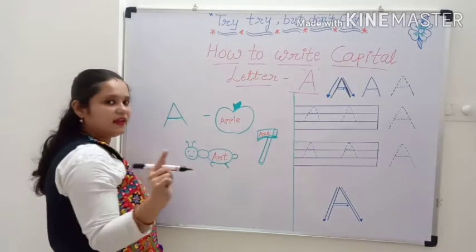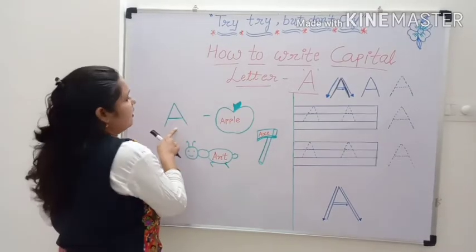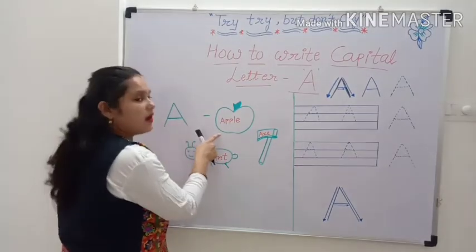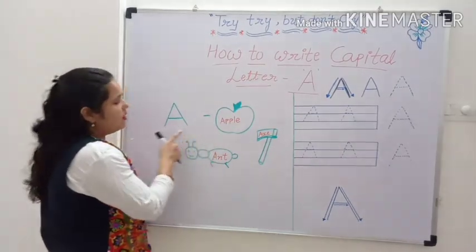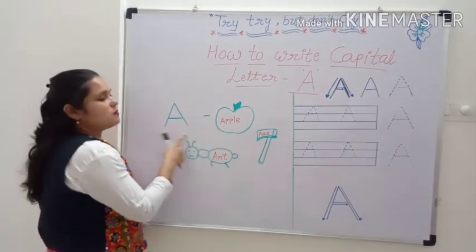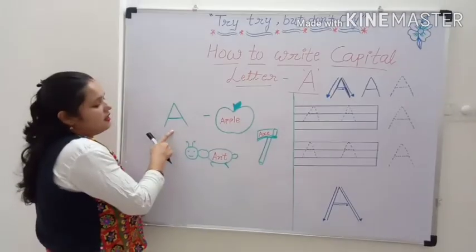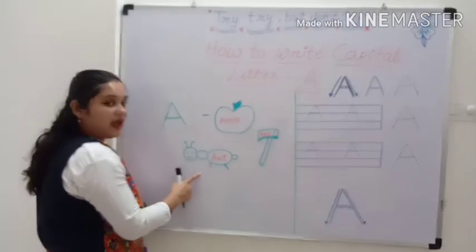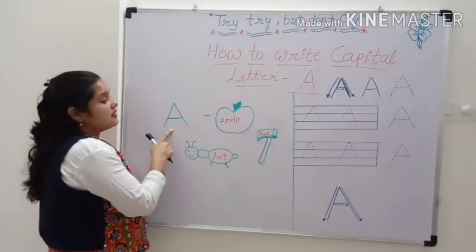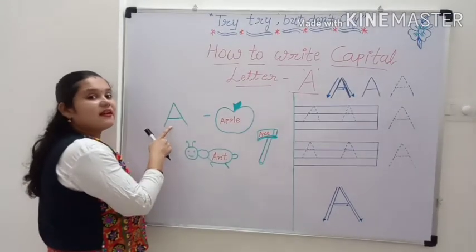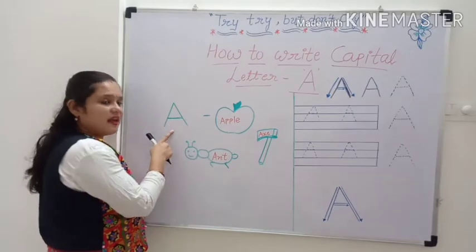Repeat again. A is for apple. A is for axe. A is for ant. This is capital letter A.